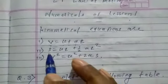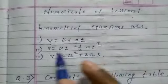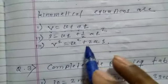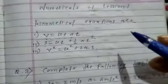The second kinematical equation: s equals ut plus 1 by 2 a t square, where s is the displacement. And the third kinematical equation: v square equals u square plus twice a s.